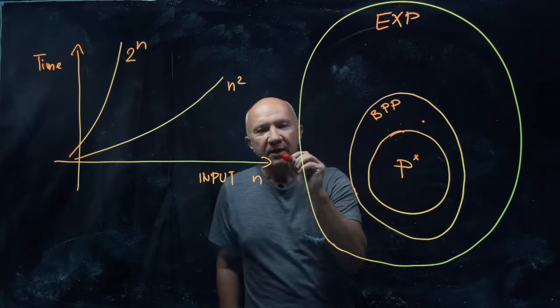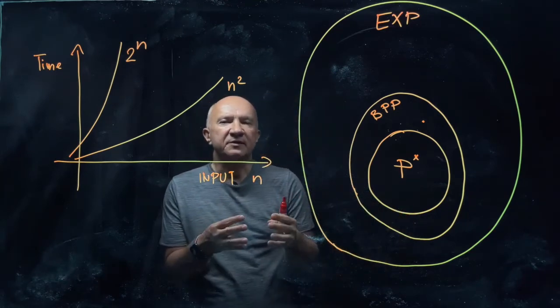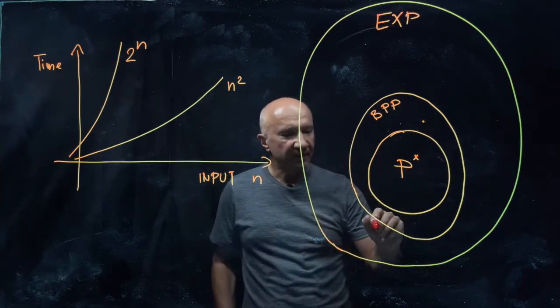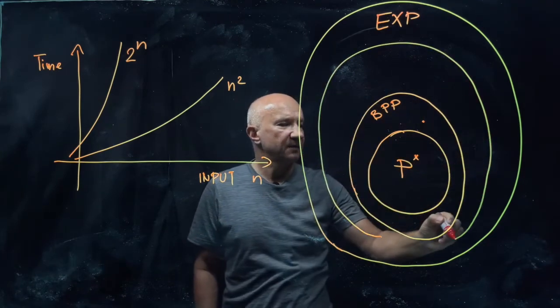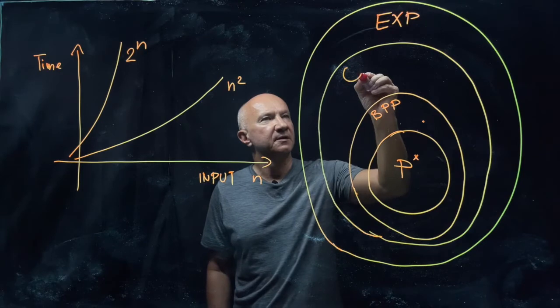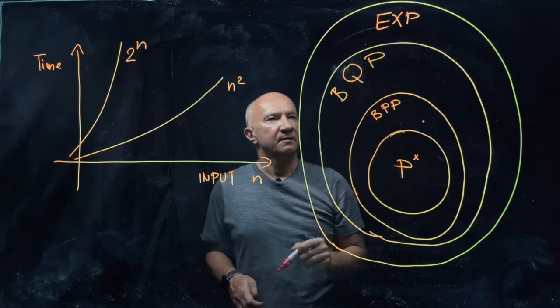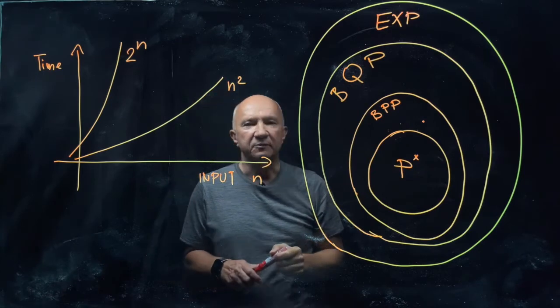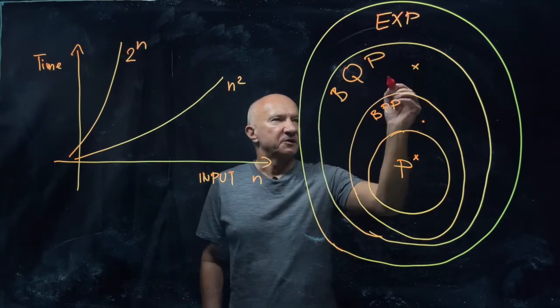What we are interested in is another class - a class of problems that quantum computers can solve in polynomial time. And this class is larger than BPP. So we call it BQP, that would be bounded error quantum polynomial time. There are problems in this class...